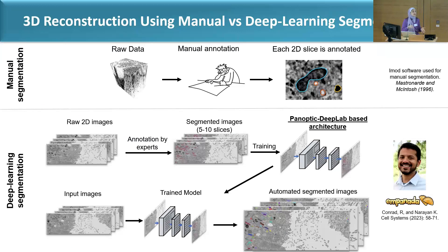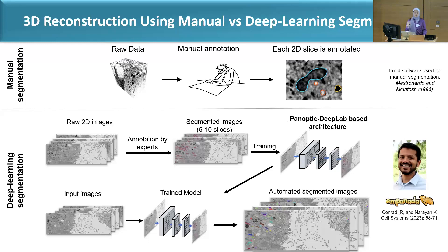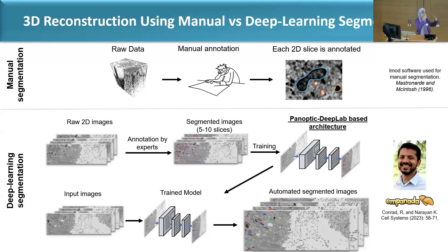We can compare two approaches: manual segmentation and deep learning segmentation. Manual segmentation involves taking raw data and manually segmenting all slices to get the final output. For deep learning, we use the panoptic deep lab algorithm and the software Empanada — we'd like to thank Kiefer for developing this software. We segment only a few slices, train using the panoptic deep lab architecture, then input the whole volume to get automated segmentation.